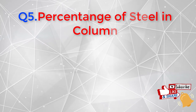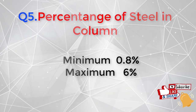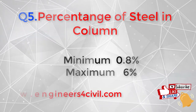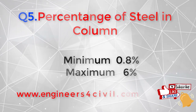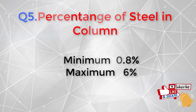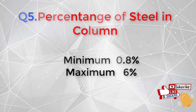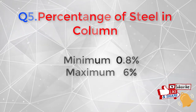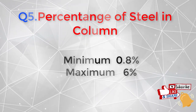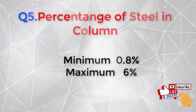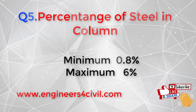The fifth question is: what is the percentage of steel in a column? The minimum percentage is 0.8% and the maximum is 6%. This percentage refers to the cross-sectional area of the column — from that area, you can calculate the area of steel required.